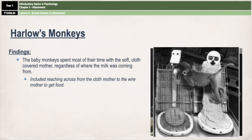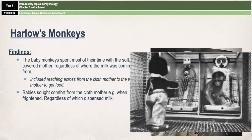It was also found that the baby monkeys would seek comfort from the cloth mother, for example when they were frightened. As you can see in the picture, the baby is sitting with the cloth mother because a doll has been introduced to the cage, which is a frightening and new experience. The baby monkey goes to the cloth mother for reassurance, confidence, and protection.